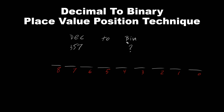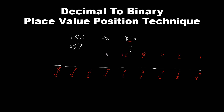Binary is a base 2 system, so base is 2. Now we can get our decimal values for each place. So 2 to the power of 0 is 1 — any number to the power of 0 is 1. 2 to the power of 1 is 2. 2 to the power of 2 is 4. 2 to the power of 3 is 8. 2 to the power of 4 is 16, and so on.